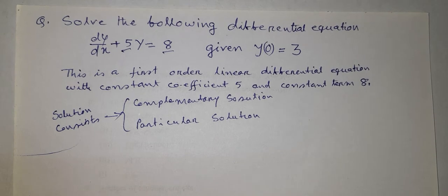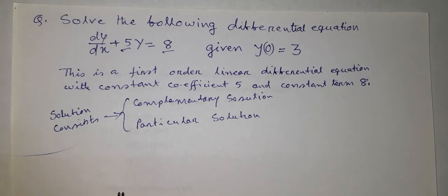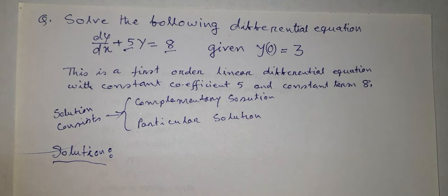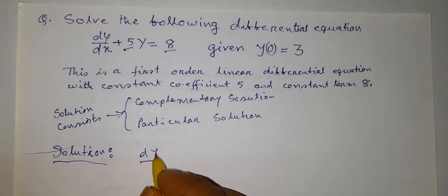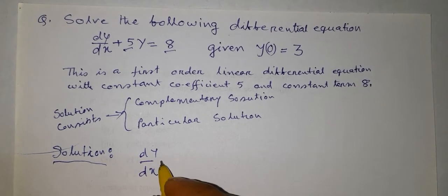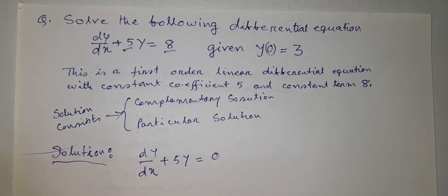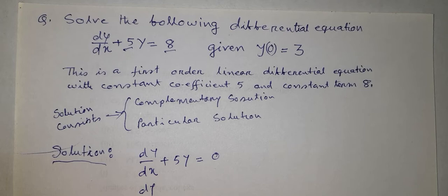The solution of this equation consists of two parts: the complementary solution and the particular solution. The complementary solution is obtained by considering the homogeneous part, that is dy/dx plus 5y equal to 0, which gives dy/dx equal to minus 5y.